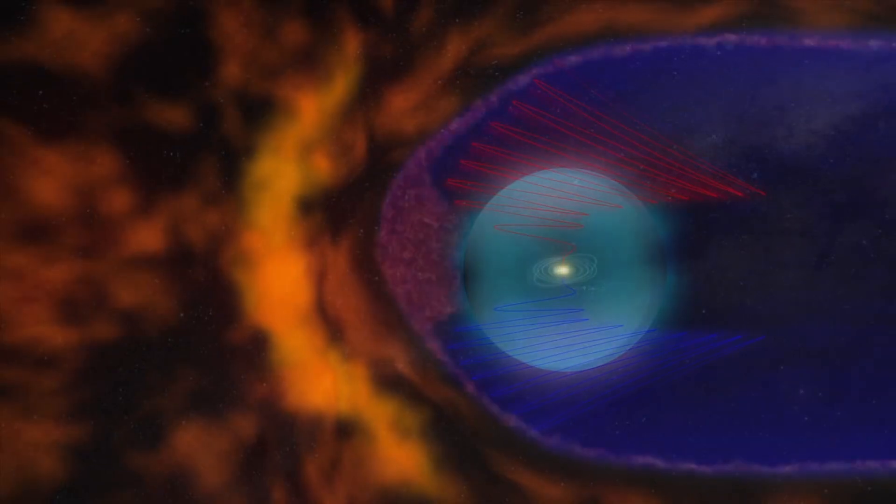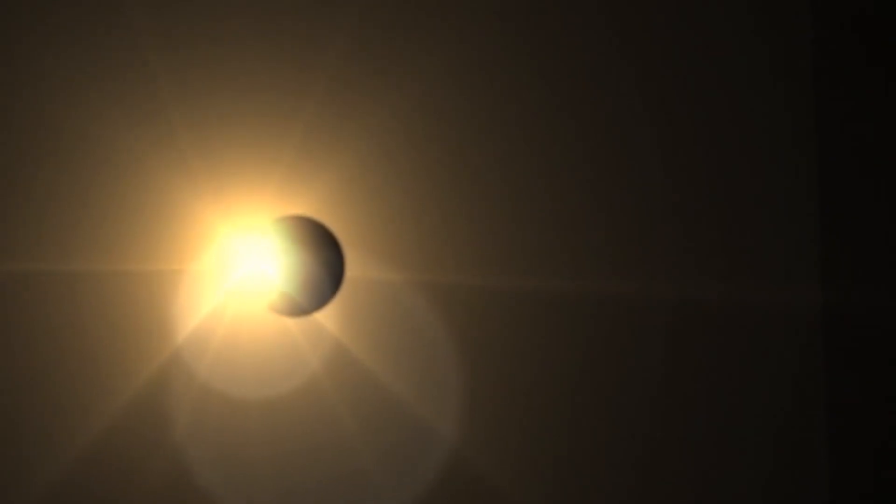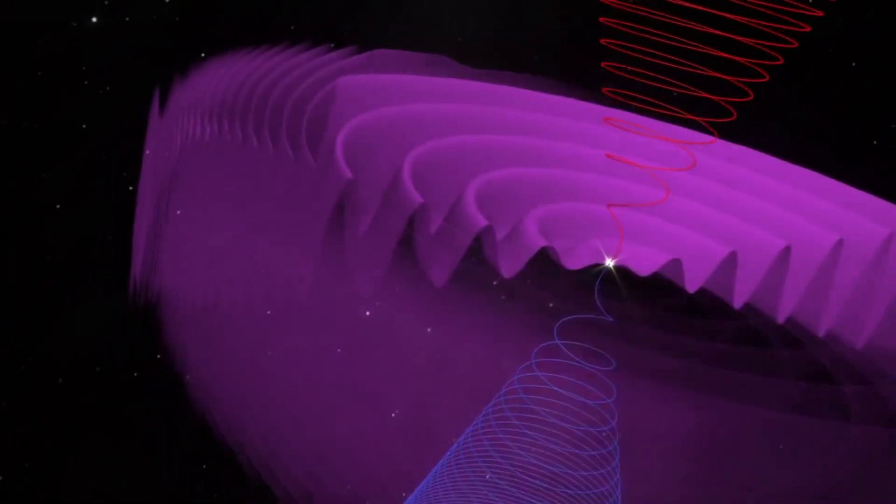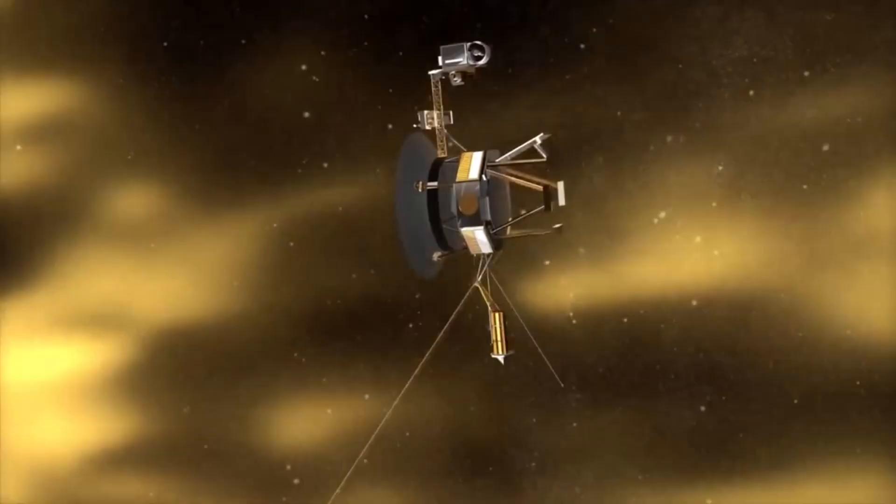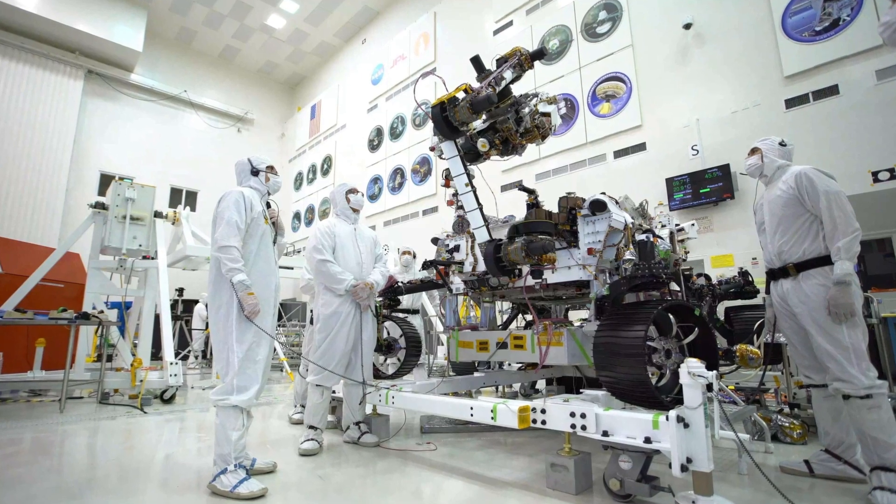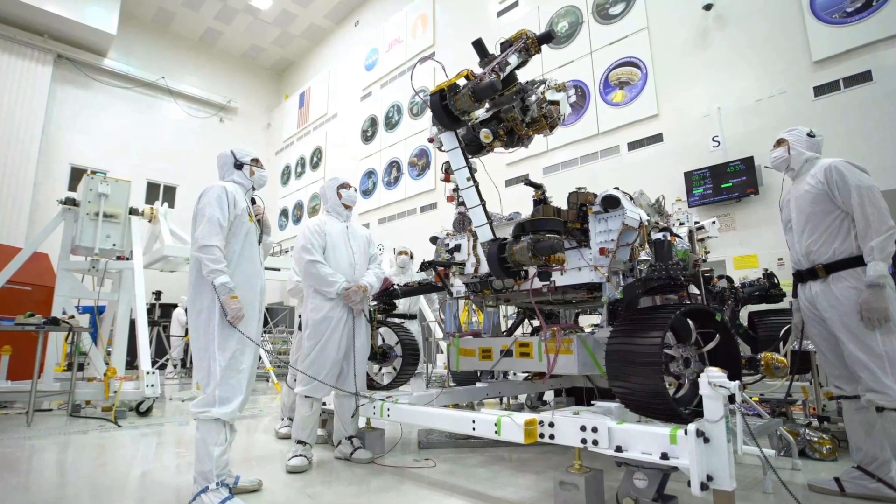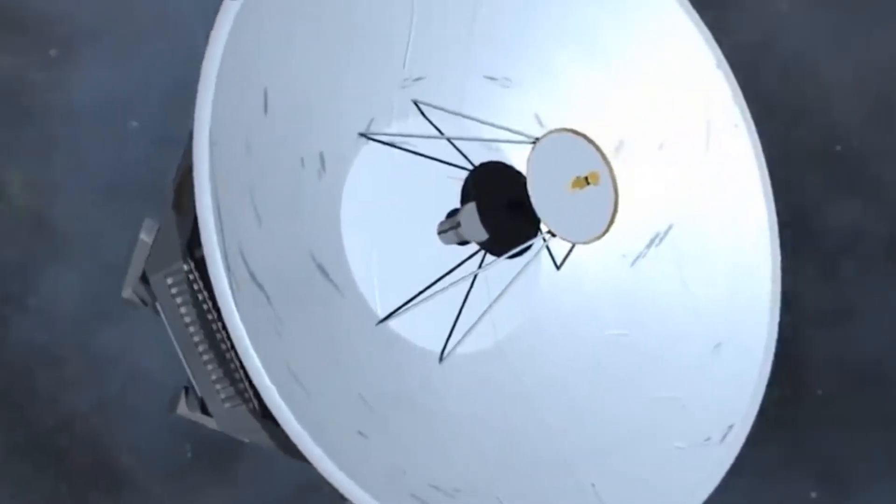Voyager 2 encountered a problem in April 1978, when no directives were sent to it for a while, prompting it to transfer from its primary radio receiver to its backup receiver. The primary receiver eventually stopped working totally. The backup receiver was working, but due to a faulty capacitor, it could only pick up messages that were delivered at a specific frequency. This frequency would be influenced by the Earth's rotation due to the Doppler effect and the temperature of the onboard receiver, among other factors. Engineers had to determine the precise frequency of the signal for each transmission to Voyager 2 so that it could be picked up by the spacecraft.